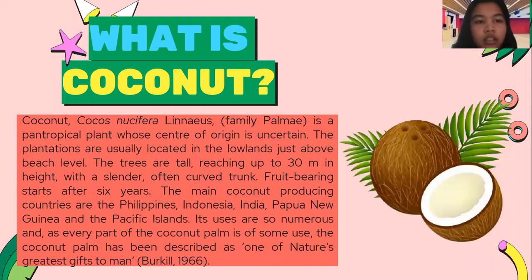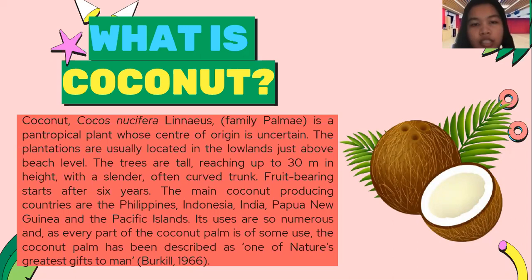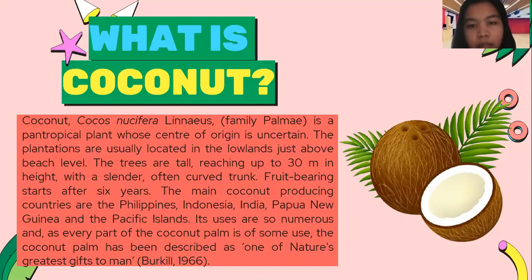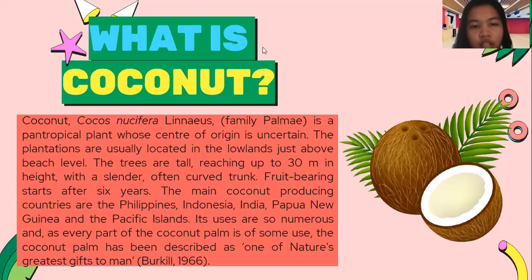What is coconut? The coconut, or Cocos nucifera Linnaeus, family Palmae, is a pantropical plant whose center of origin is uncertain. The plantations are usually located in the lowlands just above beach level. The trees are tall, reaching up to 30 meters in height with a slender or curved trunk. Fruit bearing starts after 6 years. The main coconut producing countries are the Philippines, Indonesia, India, Papua New Guinea, and the Pacific Islands. Its uses are so numerous, as every part of the coconut palm is of some use, that the coconut palm has been described as one of nature's greatest gifts to men.